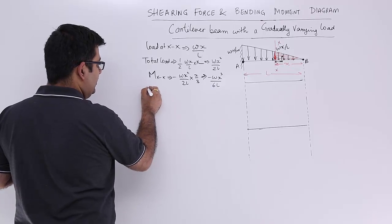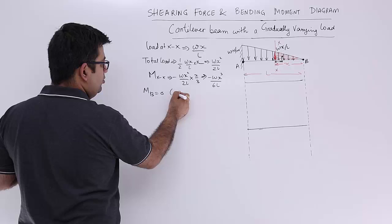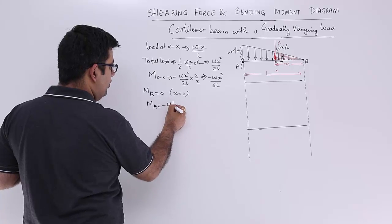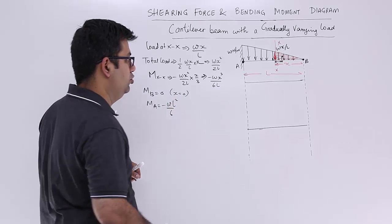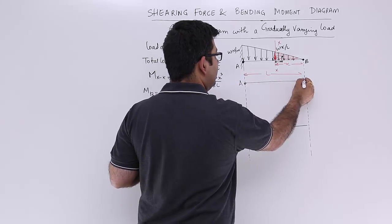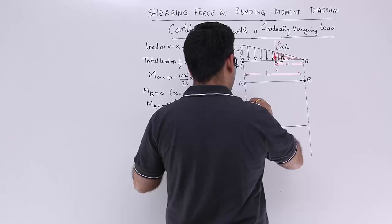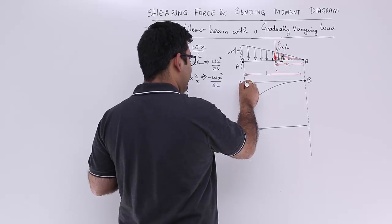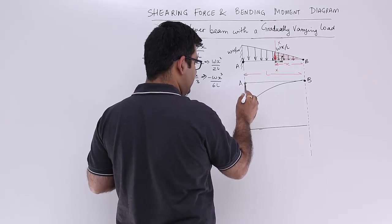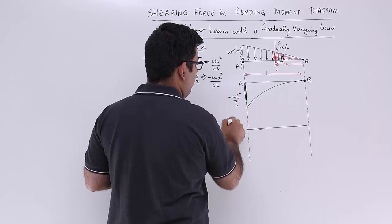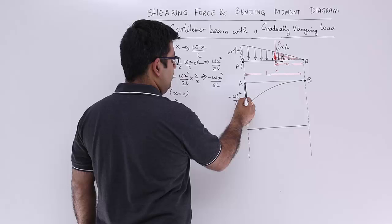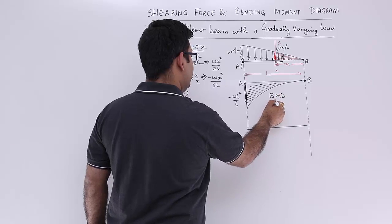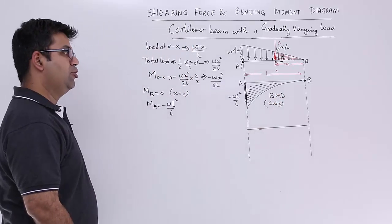So the bending moment at B would be 0 because X is 0. The bending moment at A would be minus WL square by 6. So if this is A and this is B, let me just draw a cubic, so this is the cubic variation. This length over here is minus WL square by 6. So this shows the bending moment diagram, which is showing a cubic variation.